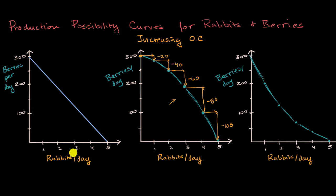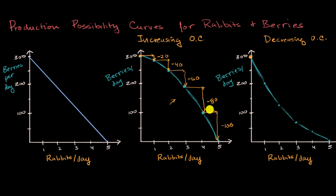So which of these would describe a decreasing opportunity cost? If the bowed-out curve is increasing opportunity cost, then being bowed in would be a decreasing opportunity cost. Let's make sure that makes sense. Going back to a scenario where we're doing nothing but picking berries: that first rabbit requires me to train myself, buy tools, and stretch — it takes a lot of effort. So there I give up 100 berries; my opportunity cost for that first rabbit was 100 berries.